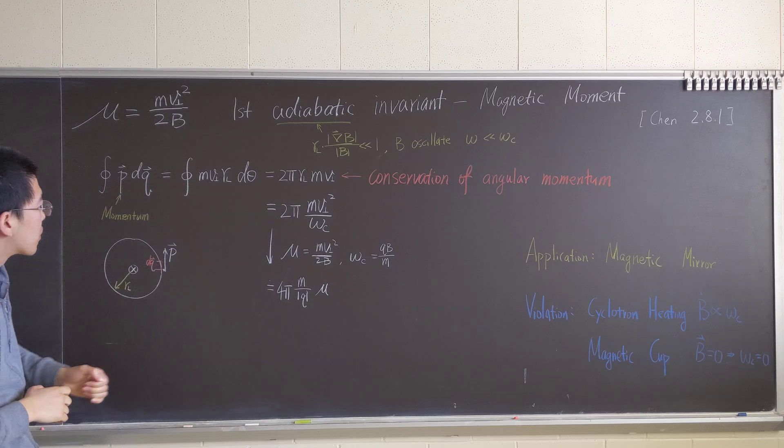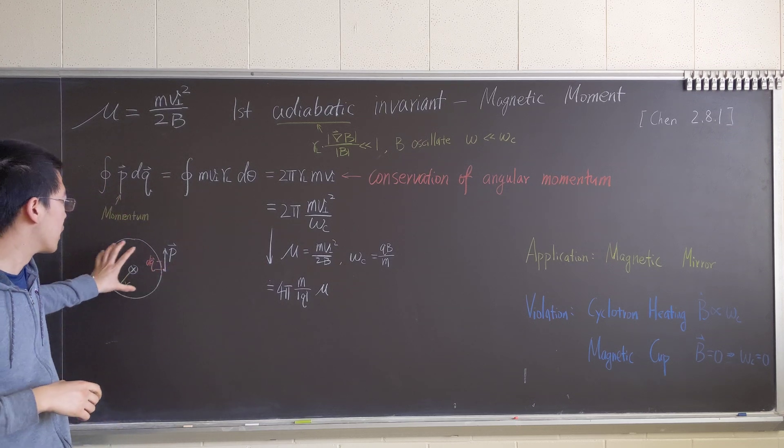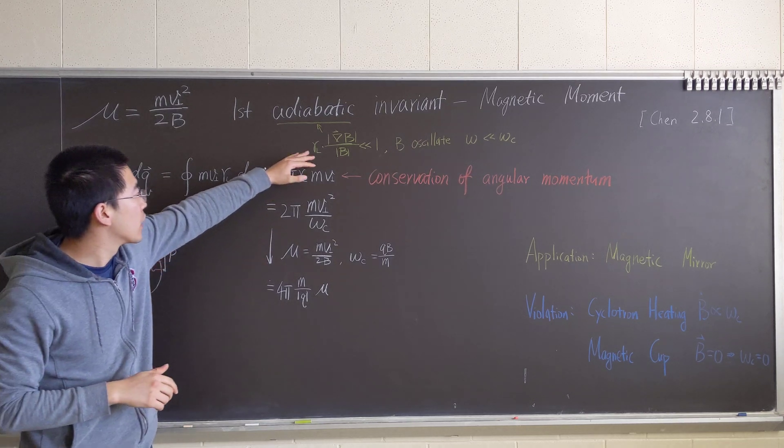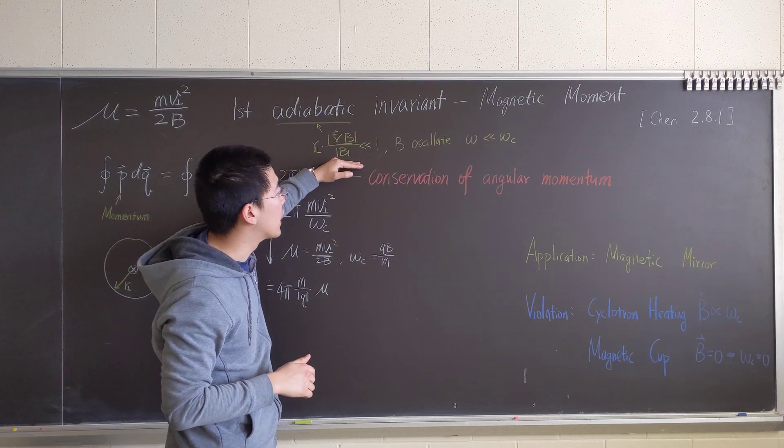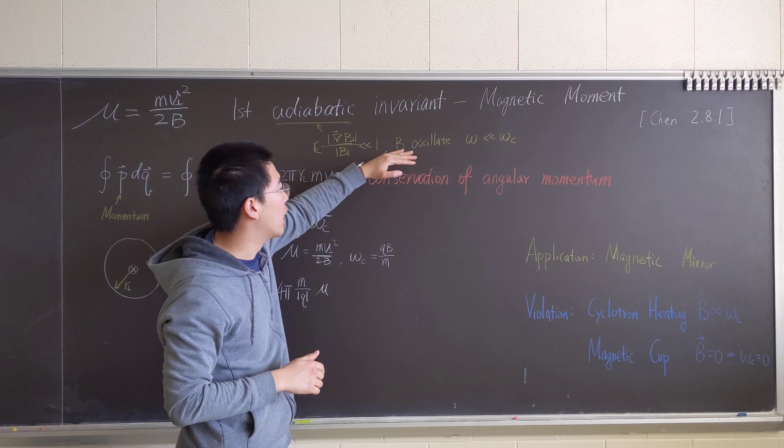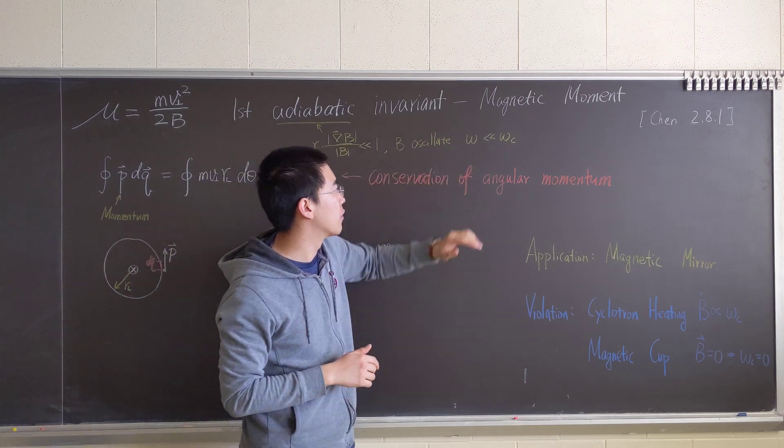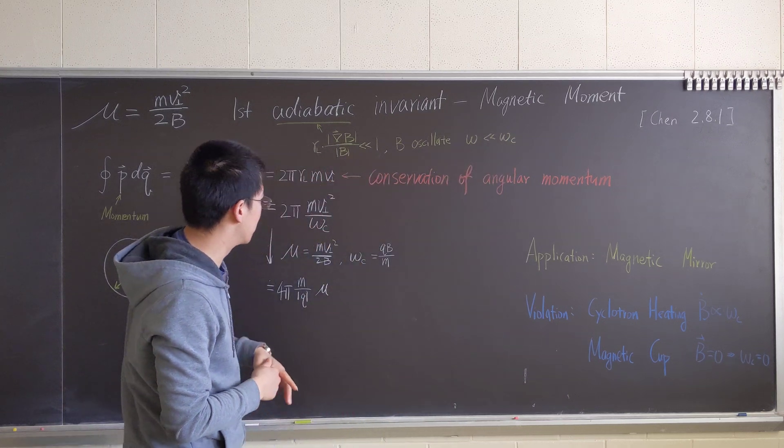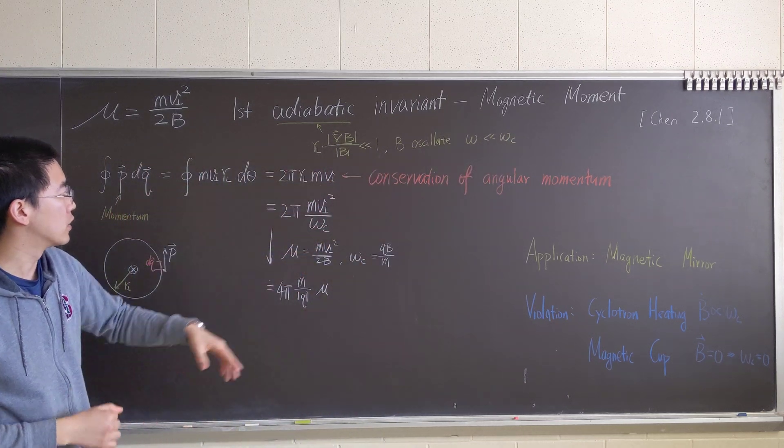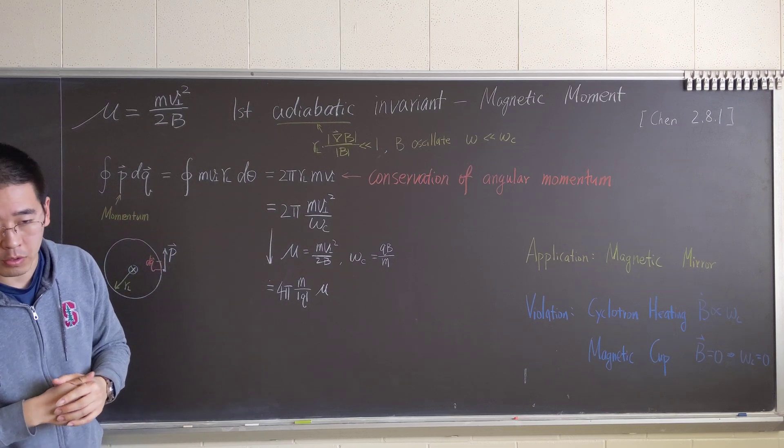I'm going to do the integral because it will be like 2π. Since we're doing adiabatic, we consider the change of variation of the magnetic field is small, and the oscillation of the magnetic field is slow compared to cyclotron frequency. And this is compared to the length scale of the Larmor radius.